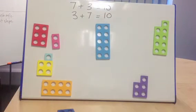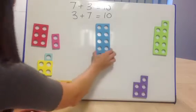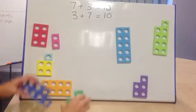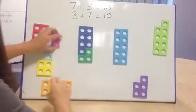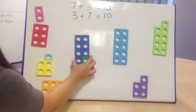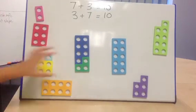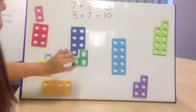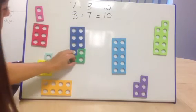Just like when I was talking about bonds to 5 in a previous video, again, by showing the Numicon together, you can make an early start thinking about algebra and what the equal sign means. So here we've got 3 add 7, or we've got 7 add 3.